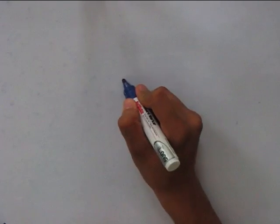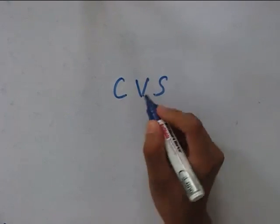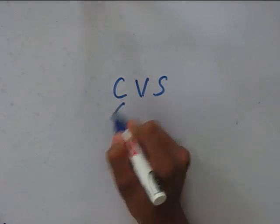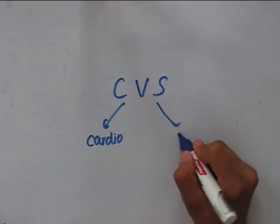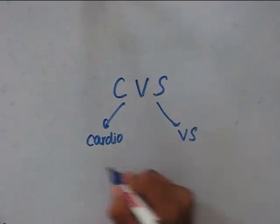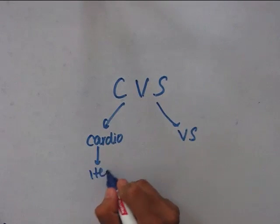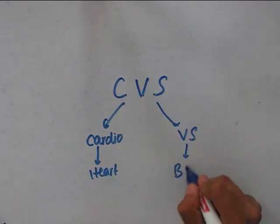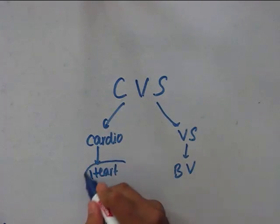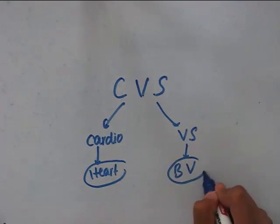Hi guys, welcome to Medicaid. Sorry for the late upload, but in this first video we are going to study about the functional organization of the cardiovascular system. As the name suggests, it is cardio and vascular system. Cardio means the heart and vascular system means the blood vessels. So in this chapter we are going to be studying about the heart and the blood vessels.